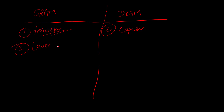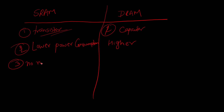SRAM has lower power consumption compared to DRAM, which has higher power consumption. SRAM is called 'static' because the data remains stable as long as the computer is on. Since SRAM uses transistors rather than capacitors, there is no charge leakage, and therefore no need to refresh the data periodically. This is a key difference from DRAM which needs constant refreshing.